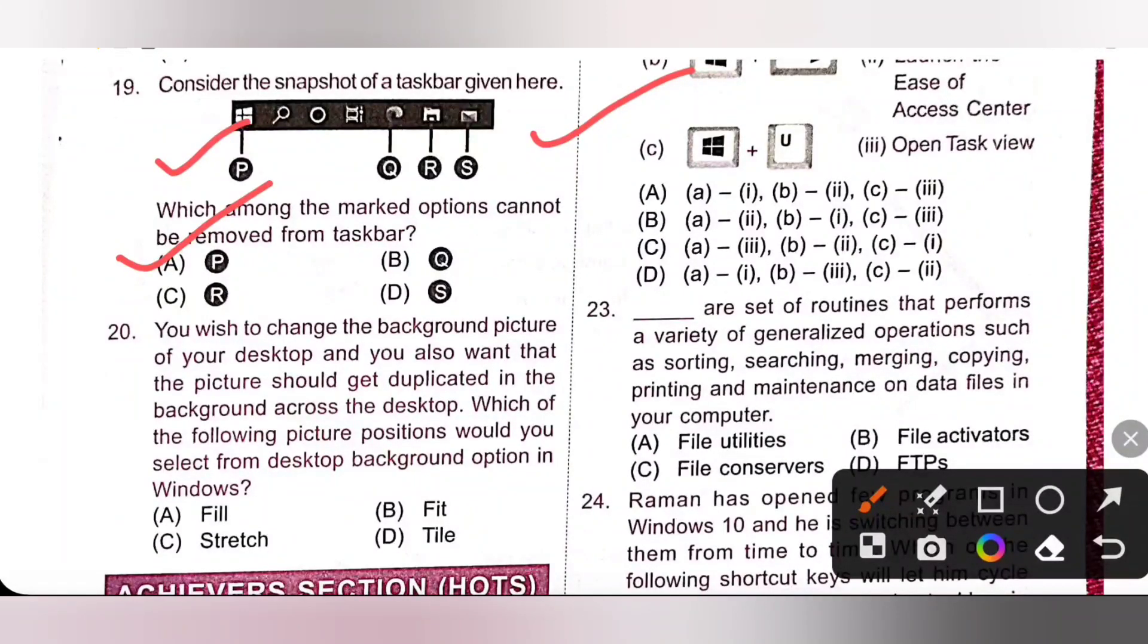Next one. You wish to change the background picture of your desktop and you also want that the picture should get duplicated in the background across the desktop. Which of the following picture position would you select from desktop background option in Windows? It is tile. Option D is the correct answer.